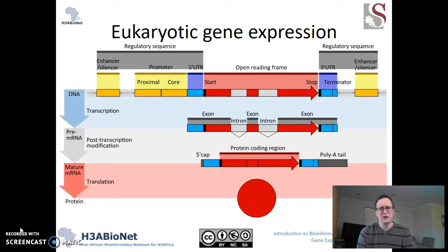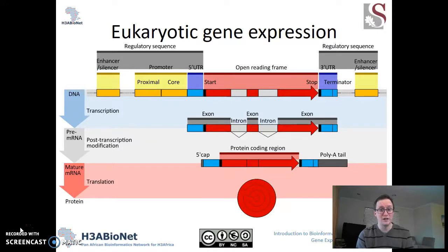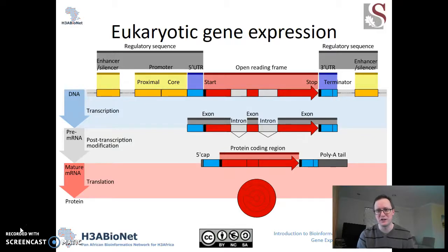I want to start a little bit with the central dogma. As you may remember, DNA gives rise to RNA in a process called transcription, and RNA produces proteins through a process called translation. We're going to unfold some of that, because there are some particularities about that process that we all need to understand.